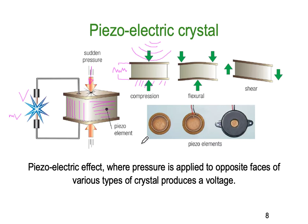Piezoelectrics work in both directions — they can be used as a microphone and they can be used as a buzzer. We can apply an alternating voltage and they will actually produce sound in the opposite direction. So you can apply an AC signal and get a buzzer. These piezo elements you can see here are actually mini speakers. The piezoelectric effect is where pressure is applied to the faces of certain types of crystals and they produce a very small voltage.